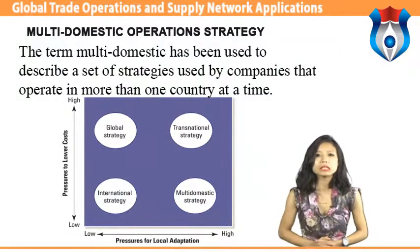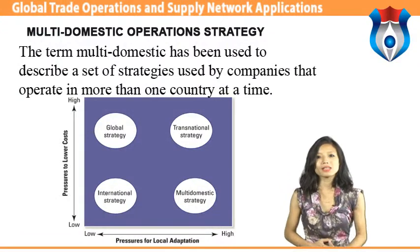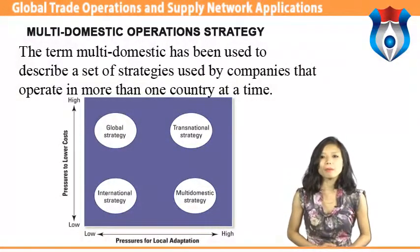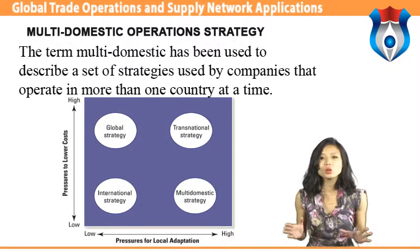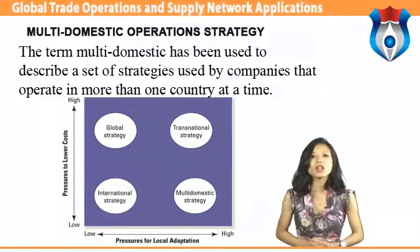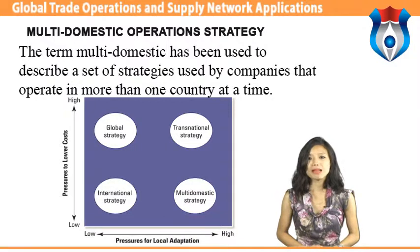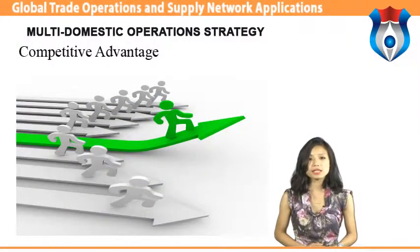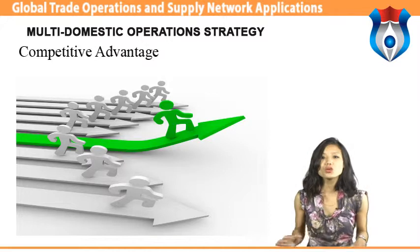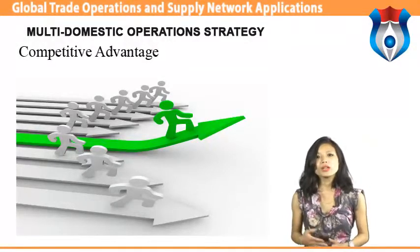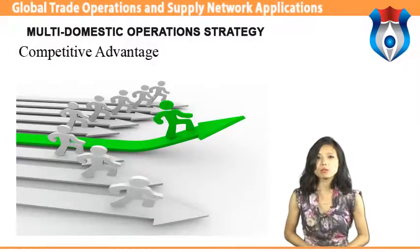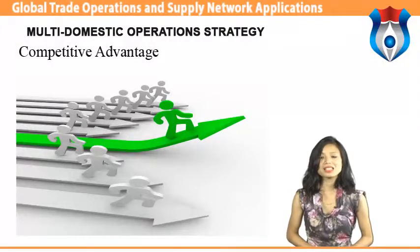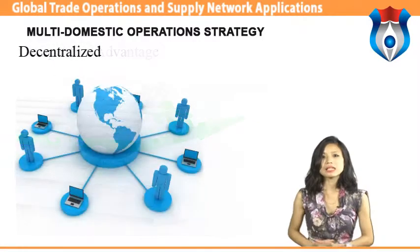We will now study the multi-domestic operation strategy. The term 'multi-domestic' describes a set of strategies used by companies that operate in more than one country at a time. As smaller businesses expand their operations into overseas markets, many choose a multi-domestic strategy. The best definition of a multi-domestic company is a business that uses a different approach in each of the markets it operates in. When considering expansion into a new market, it makes sense for any firm to choose a region where it already has a competitive advantage.